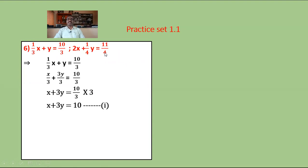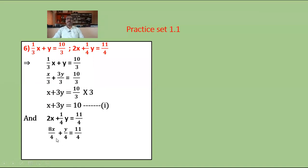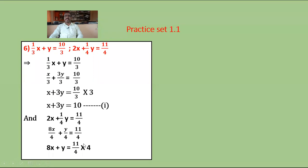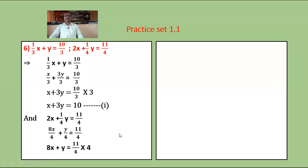Similarly, write the second equation in general form. Equation 2 is 2x plus y upon 4 equals 11 upon 4. Multiply 2x by 4 over 4 to get a common denominator: 8x upon 4 plus y upon 4 equals 11 upon 4. Since the LHS denominator is the same, take it as one fraction: 8x plus y upon 4 equals 11 upon 4. Multiplying both sides by 4: 8x plus y equals 11 — equation number 2.